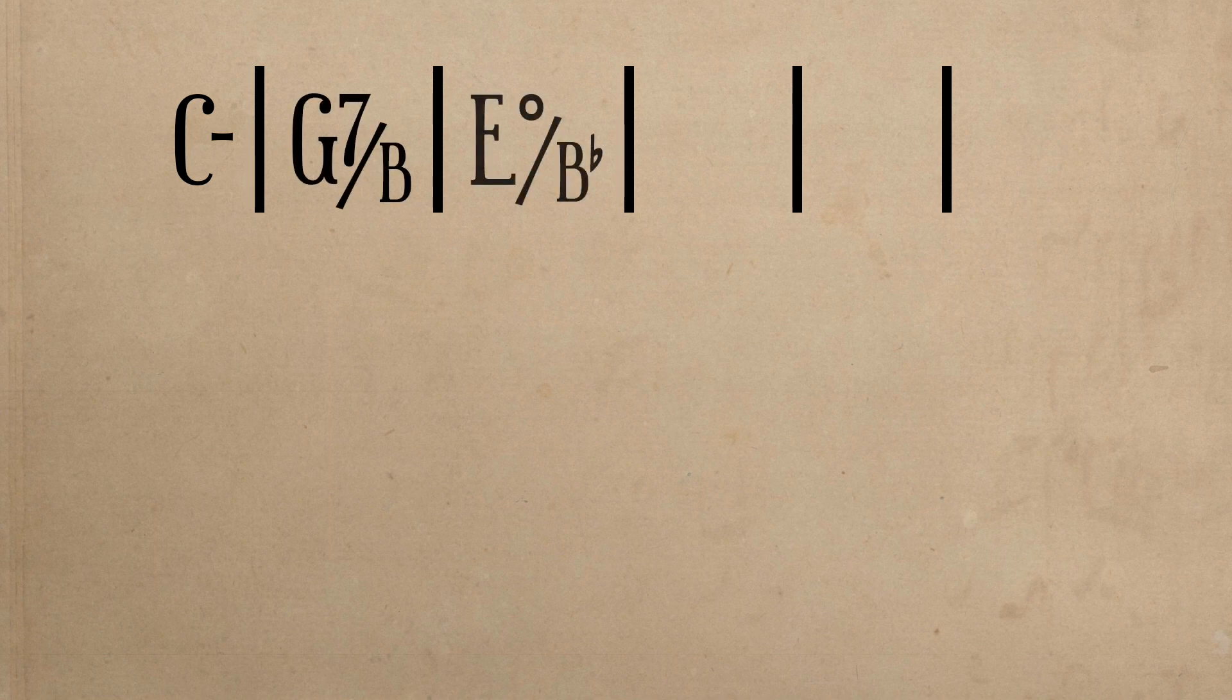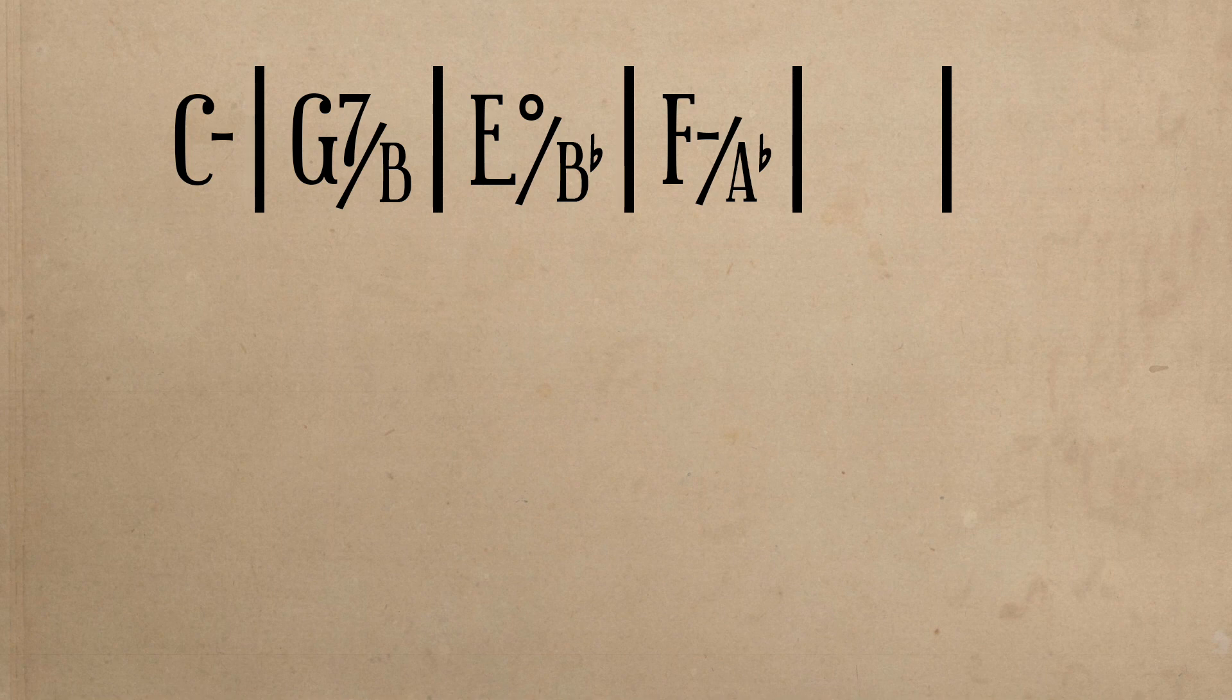and then E diminished over Bb, which is a chromatic chord used for the sake of intensifying motion forward to the following chord, F minor over Ab, the 4-6.